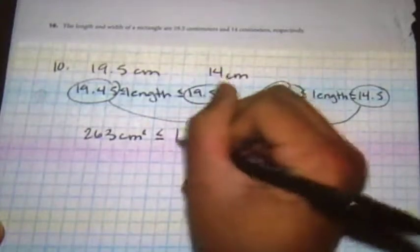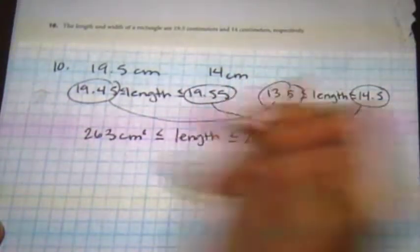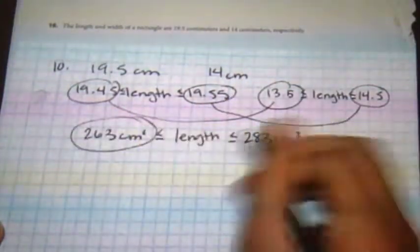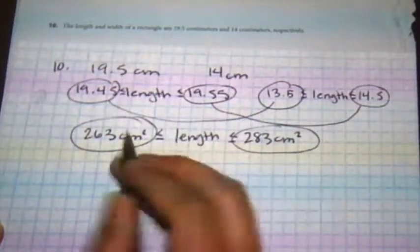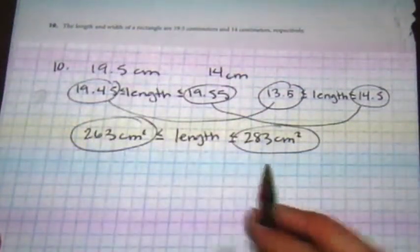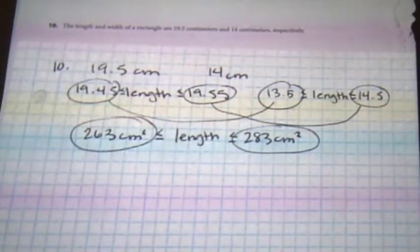So my length is somewhere between my high and my low. So 263 cm squared, 283 cm squared, my answer is somewhere in between here. And that's giving room for error in measurement.